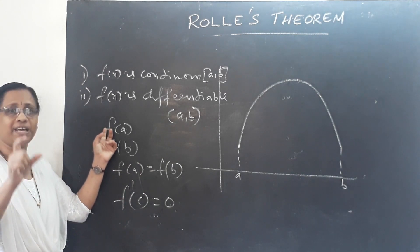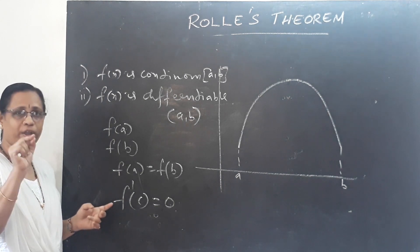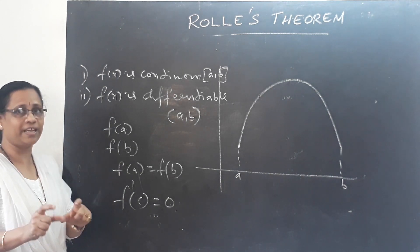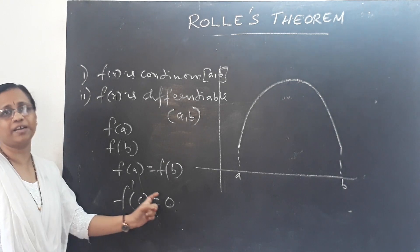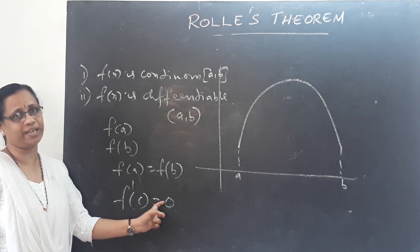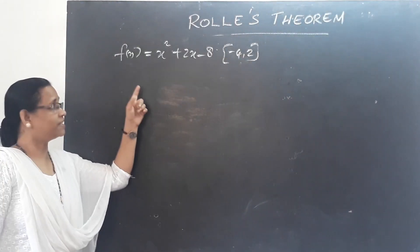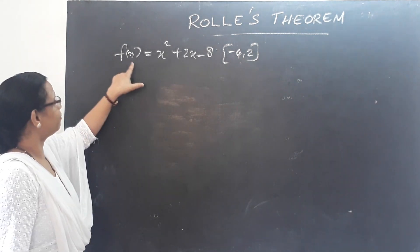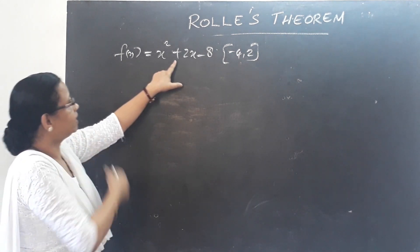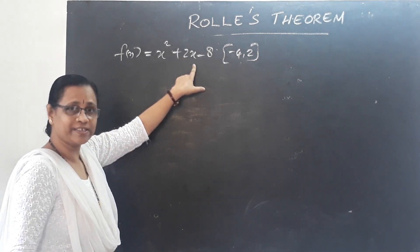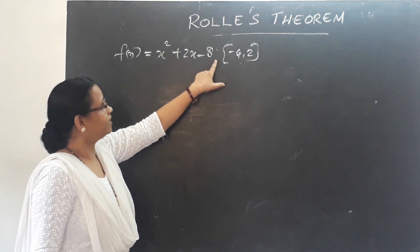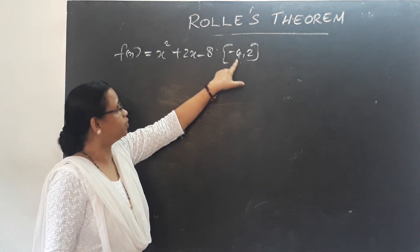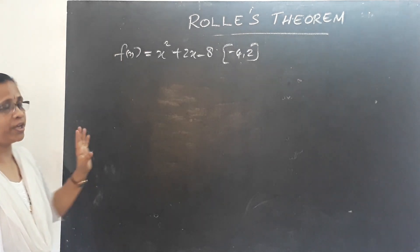Then there exists at least one point C in (A, B) such that F'(C) is equal to zero. This is the first problem: verify Rolle's Theorem for f(x) = x² + 2x − 8, where x is in the closed interval [−4, 2].